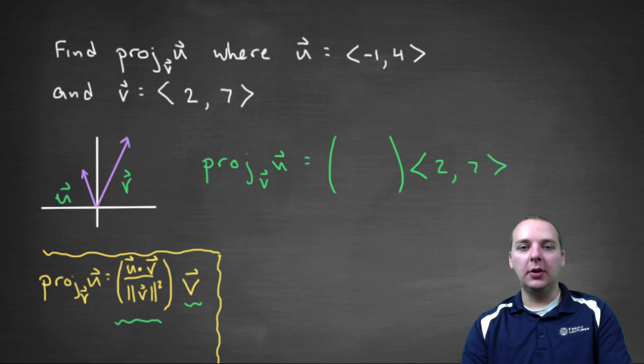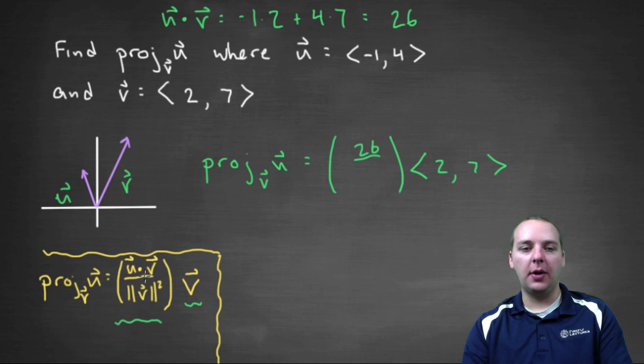So I think we can do that over here on the side. First thing, let's find the dot product. u dot v—we should be pretty comfortable with dot products. We're going to multiply the i-th components and j-th components, and then add them up. So we'd get negative one times two, plus four times seven. That would be twenty-eight minus two, which is twenty-six. So twenty-six would be the numerator, that's the dot product.